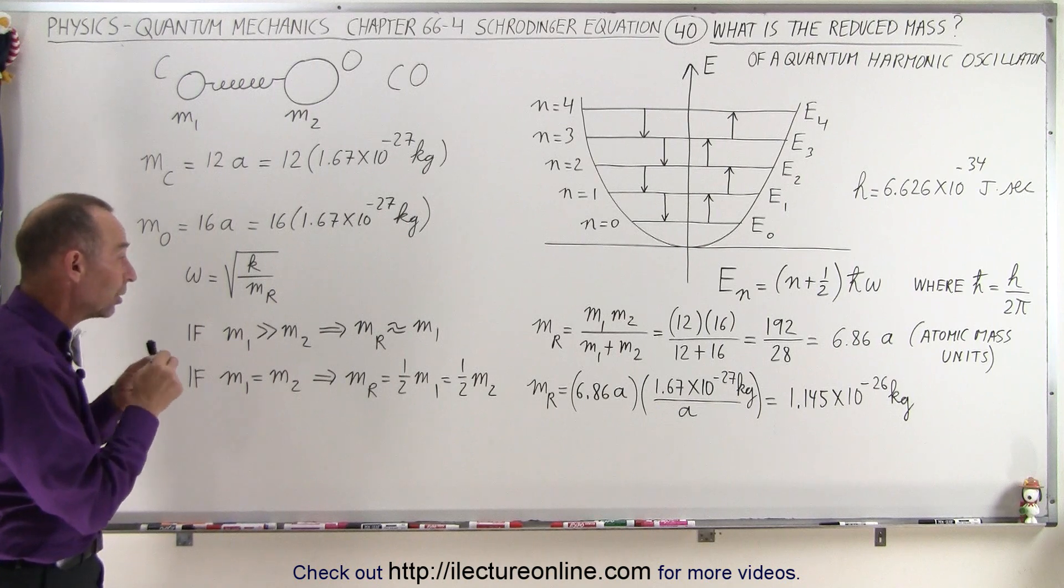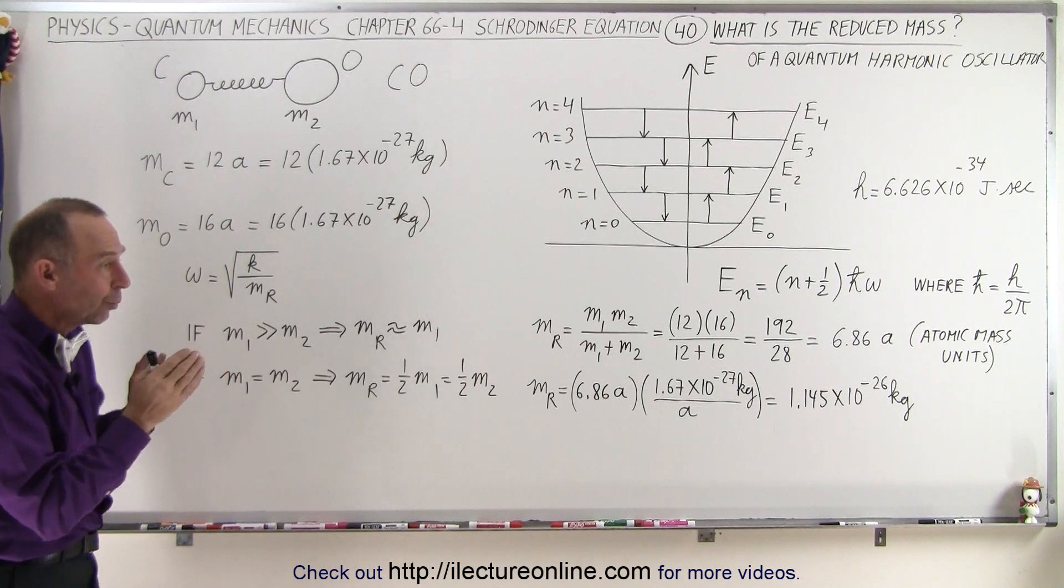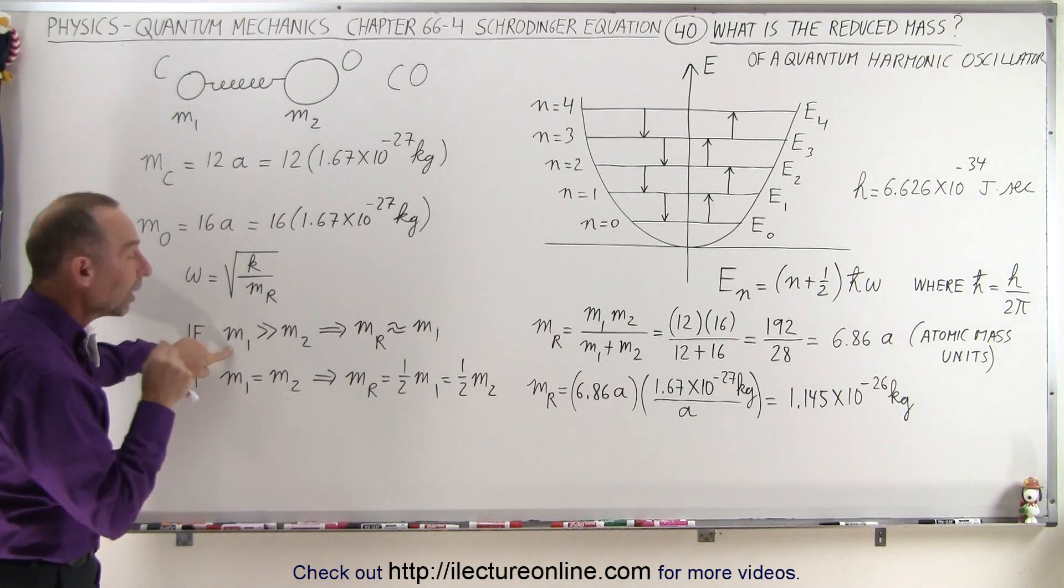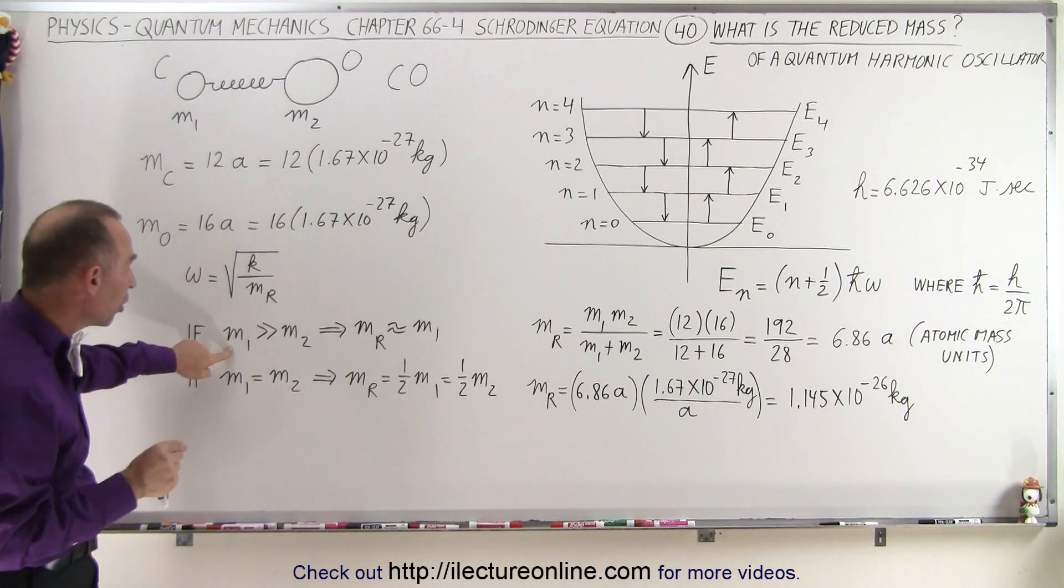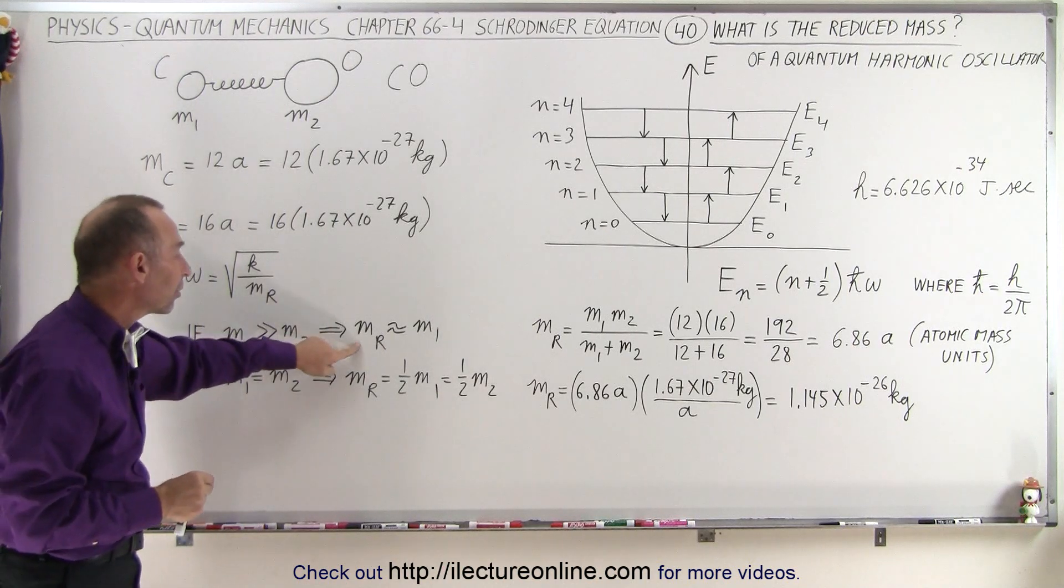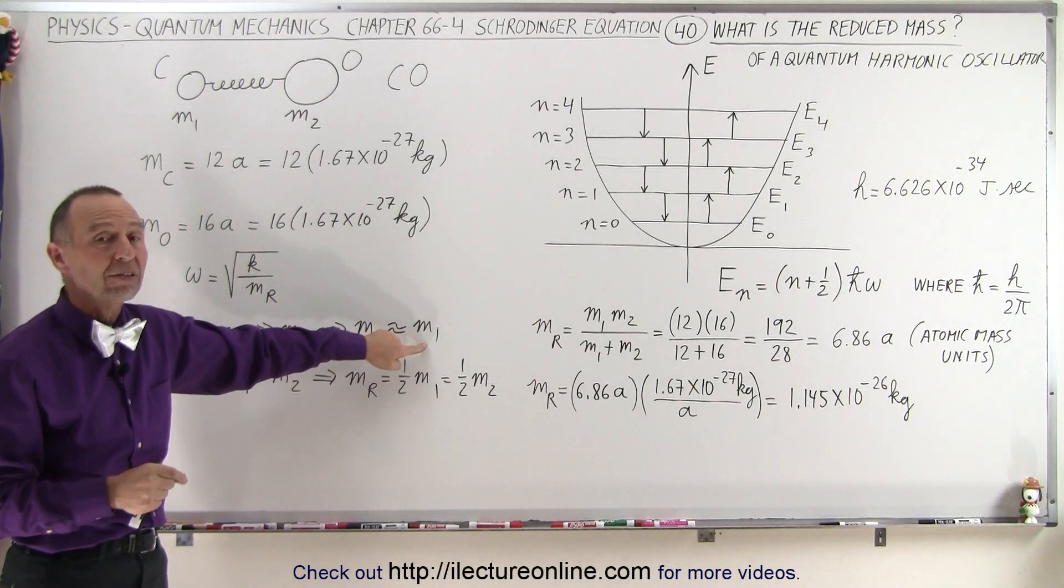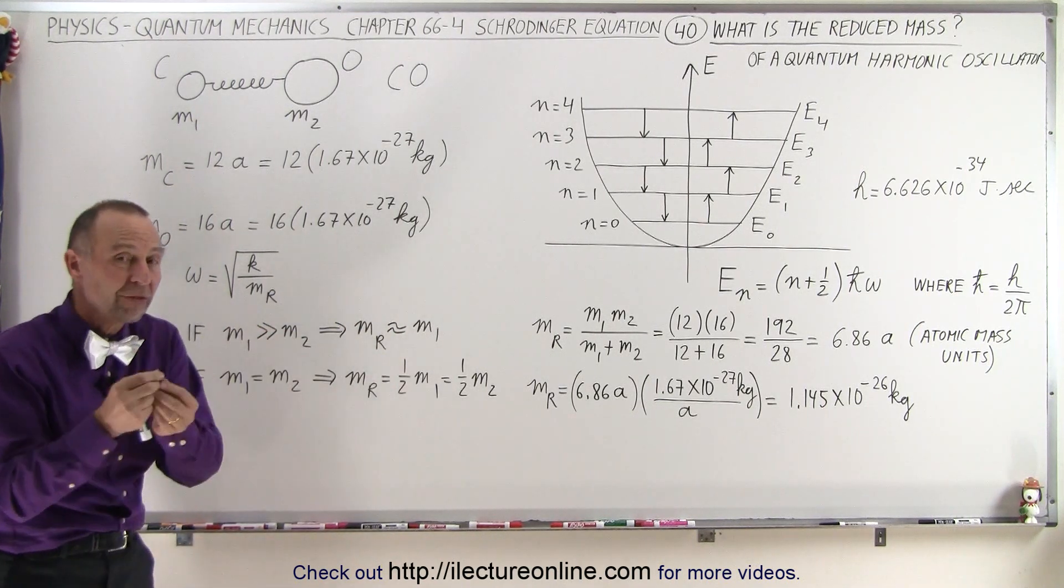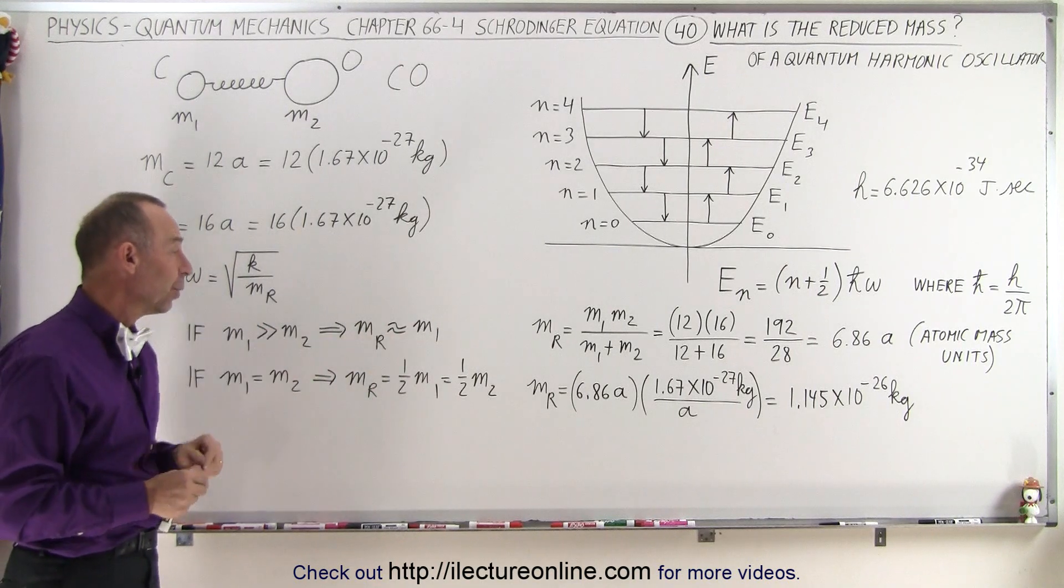Now, let's take a look at how it relates to the relative size of the two masses. If one of the masses is much larger than the other mass, the reduced mass becomes approximately equal to the larger of the two masses. Let's say that m1 was 1,000 times m2, then the reduced mass would be very nearly the mass of m1.